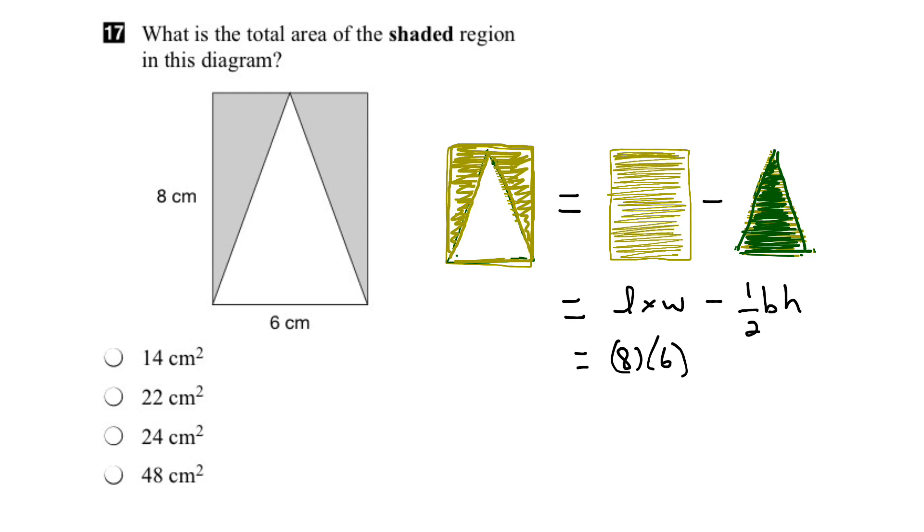And for the triangle, the base of the triangle is six centimeters, and its height is eight centimeters. So, the area of the triangle is a half its base, which is six times its height, which is eight.